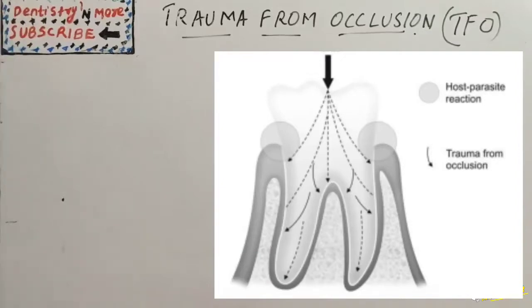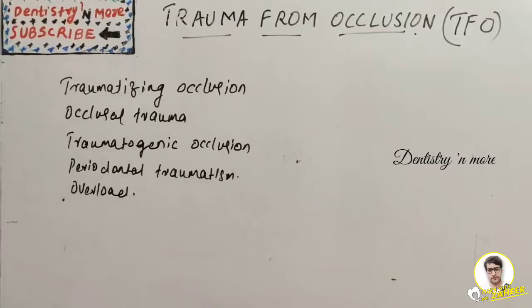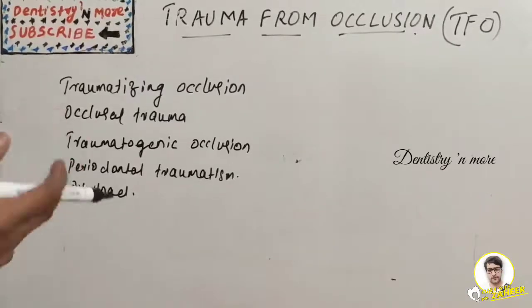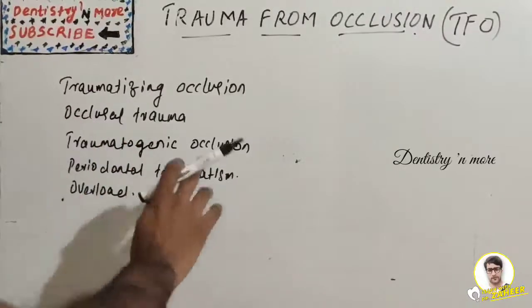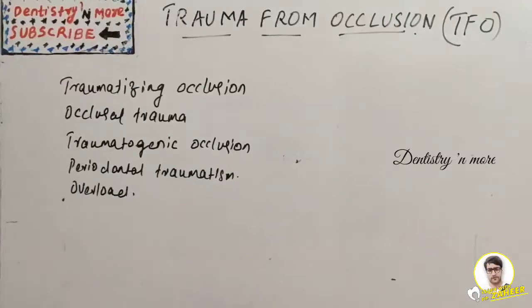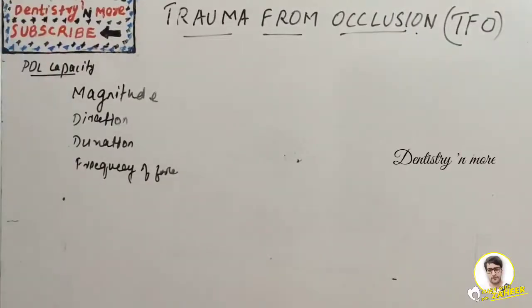Such damage is referred to as trauma from occlusion. Normally the bone and periodontal ligament have a capacity to withstand a level of force, but beyond that level, force will injure the tissues and bone. Trauma from occlusion (TFO) is also known as traumatizing occlusion, occlusal trauma, traumatogenic occlusion, periodontal traumatism, or overload.